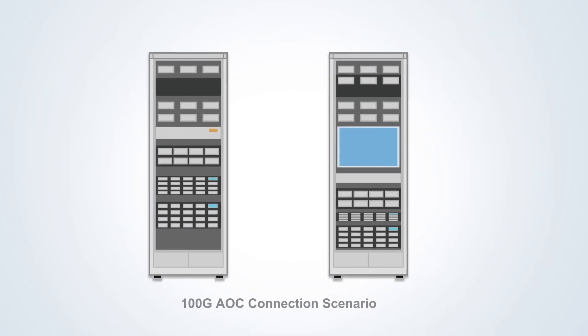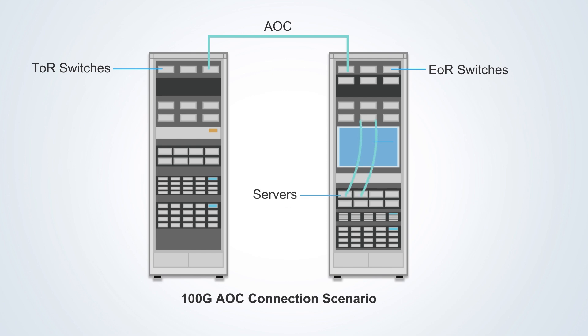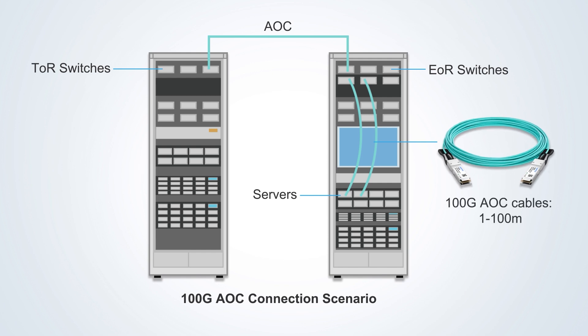100G AOC is suitable for transmission within 100 meters and is often used in multiple locations in data centers, such as TOR, EOR, and MOR. Like DAC, servers are connected to the Ethernet switch at the top of the rack, and each server will have one or two Ethernet connections to the switch. These connections can be patched using AOC cables.